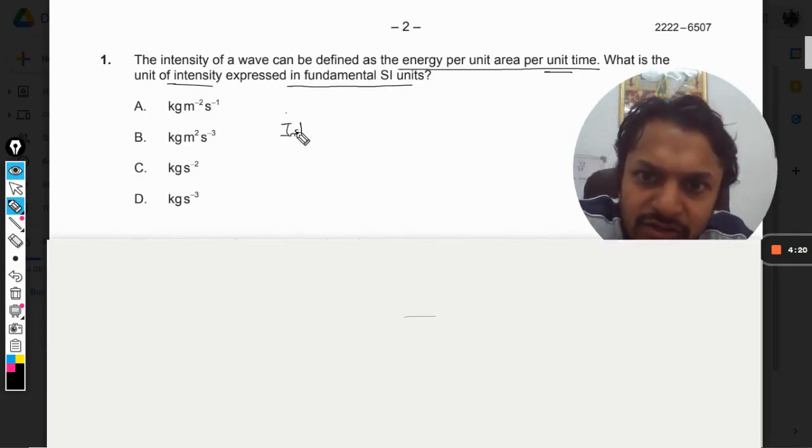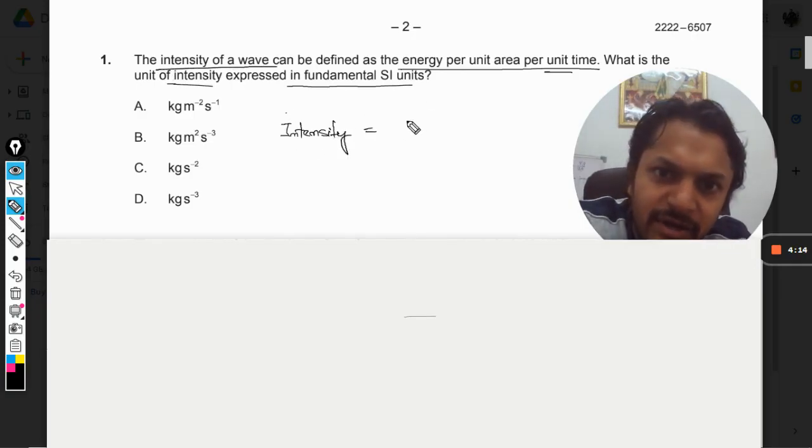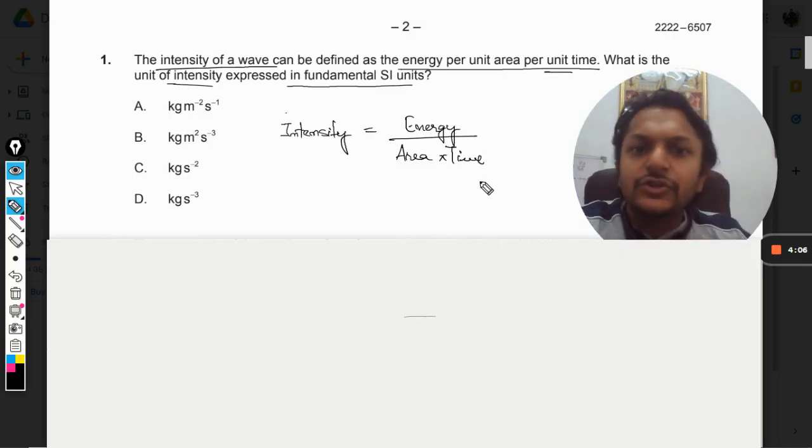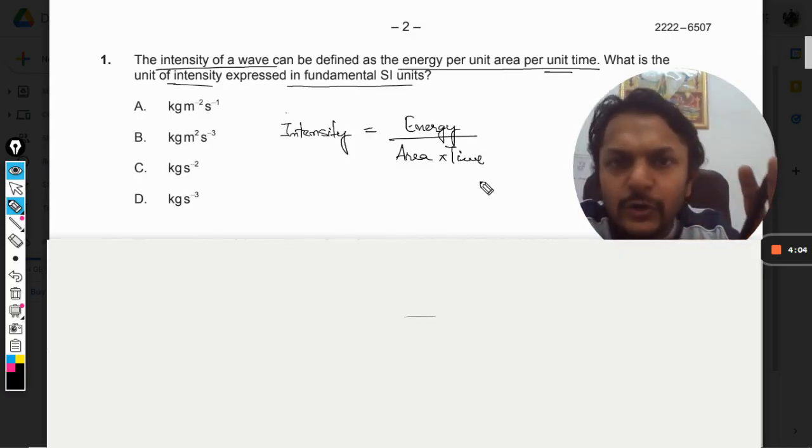But the formula for intensity is itself given in the question statement. According to the statement, the intensity of a wave can be defined as energy per unit area per unit time. So the formulation is already given to us.